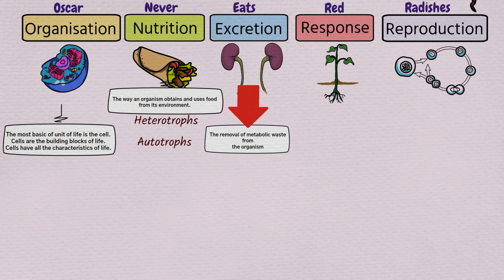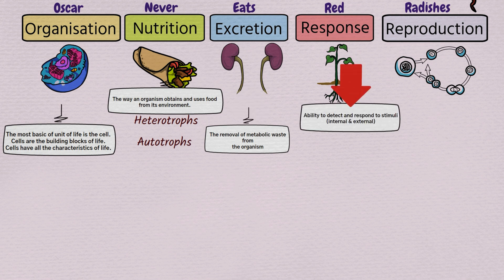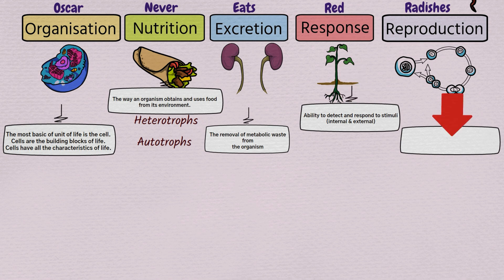Excretion is the removal of metabolic waste from the organism. Response is the ability to detect and respond to stimuli — both internal and external stimuli — for example temperature, pressure, and pain. Reproduction is to create new individuals of the same kind, and this can happen sexually or asexually.